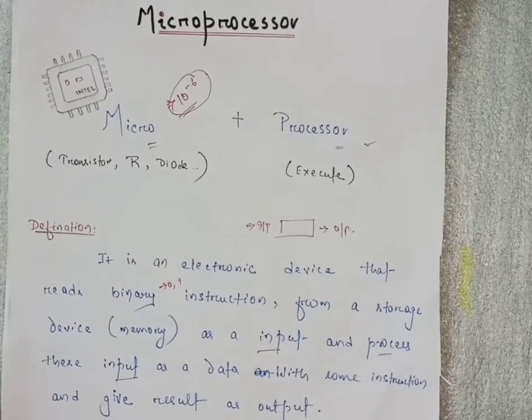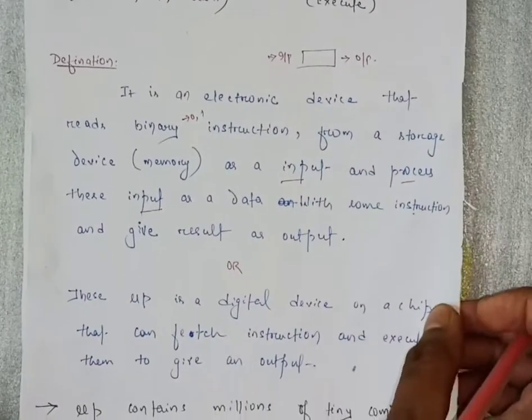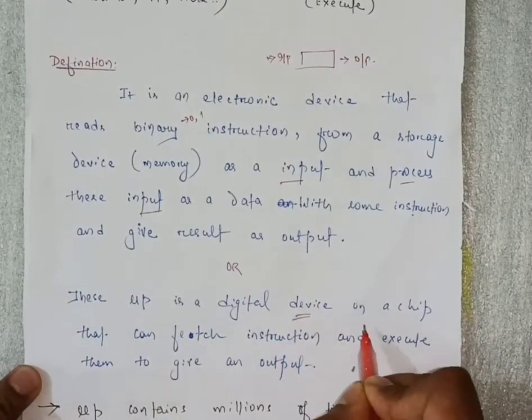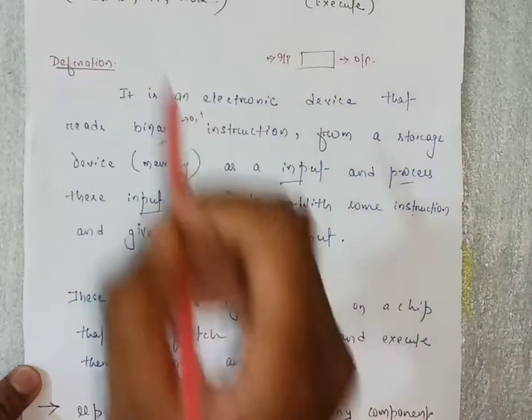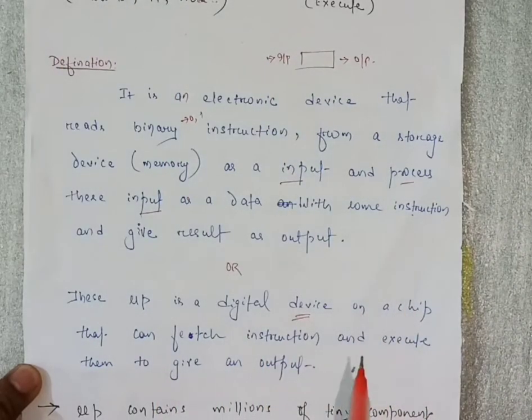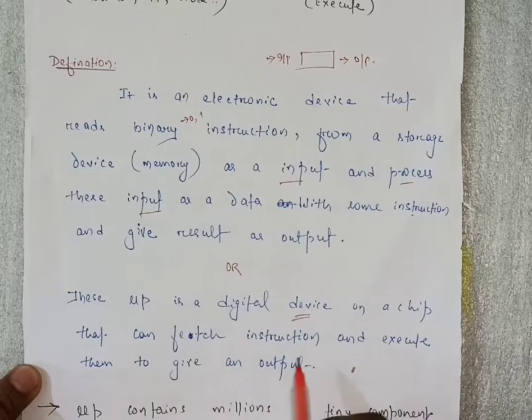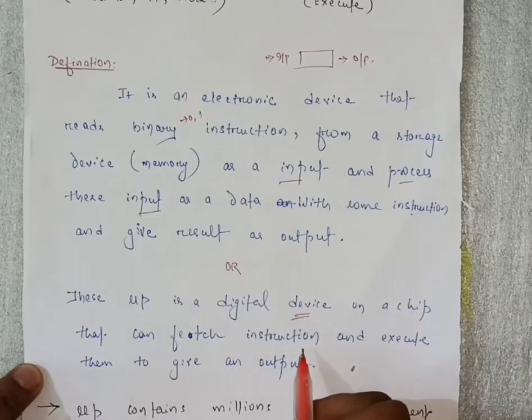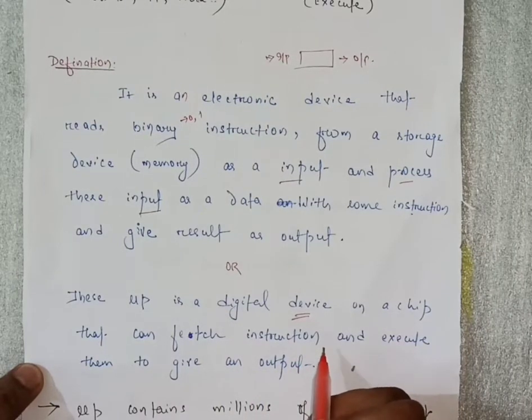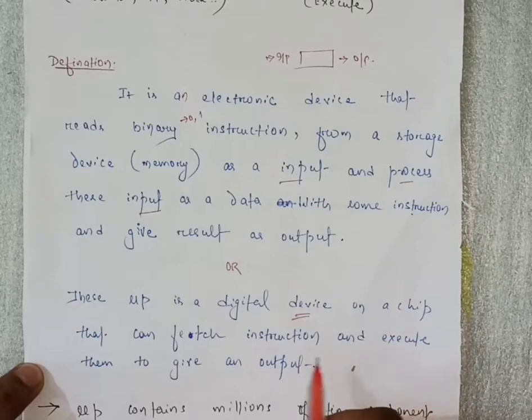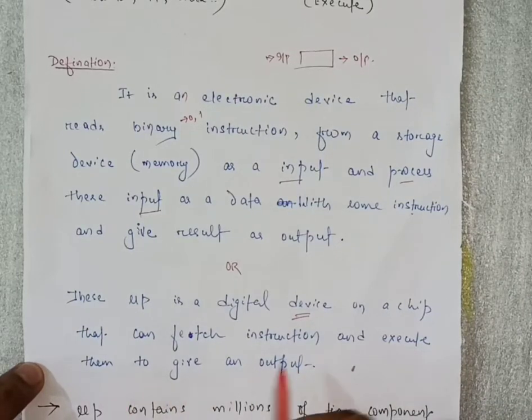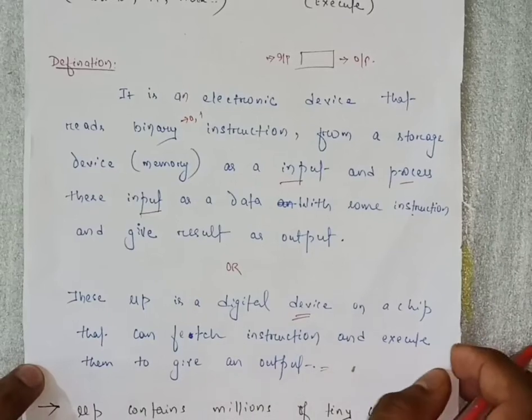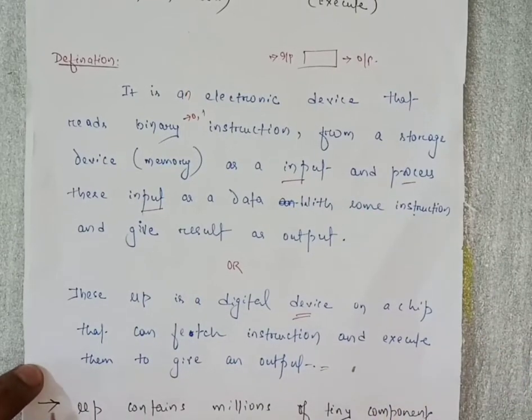Or in simple words, we can say microprocessor is a digital device on a chip, meaning on a single chip. This digital device can fetch instructions - whatever instructions we put or transfer, it will fetch and execute all the instructions and give output.